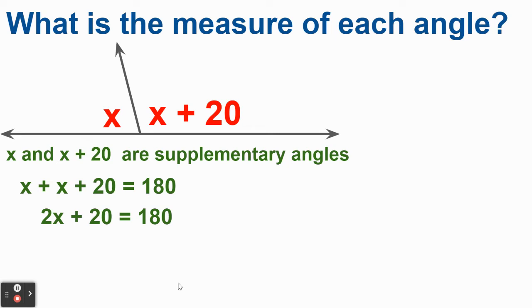Now it's a simple two-step equation. Subtract 20 from both sides. The 20 cancels there. What do we get? 2x equals 160. Well, now I just simply divide both sides by 2. x equals 80 degrees.